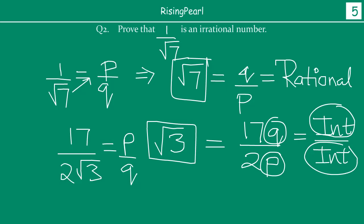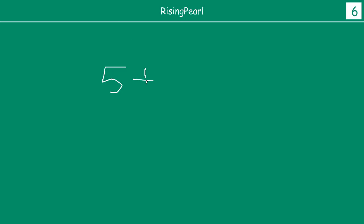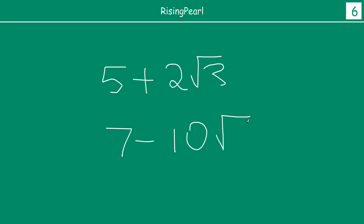In the next video, we are going to take a look at some of these kinds of proofs — how do we prove that 5 plus 2 square root 3 is an irrational number, or 7 minus 10 square root 5 is an irrational number. This is what we are going to see in our next video.